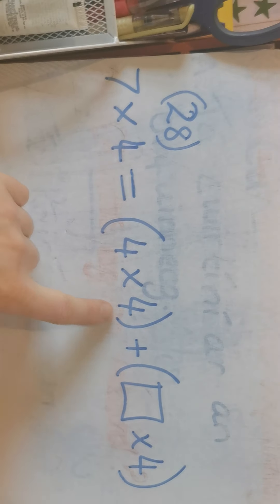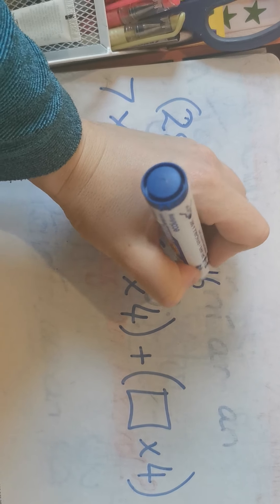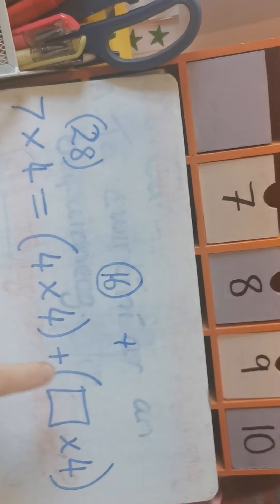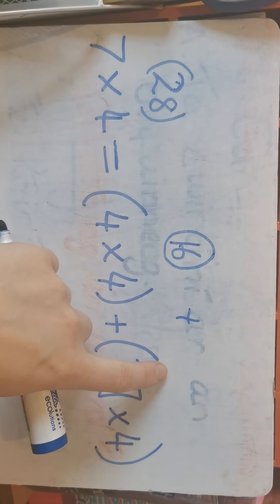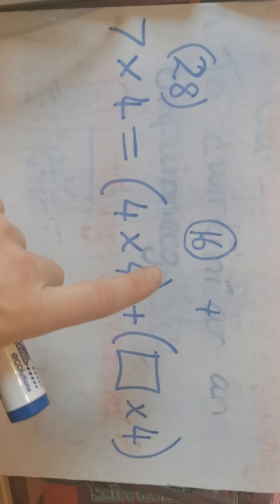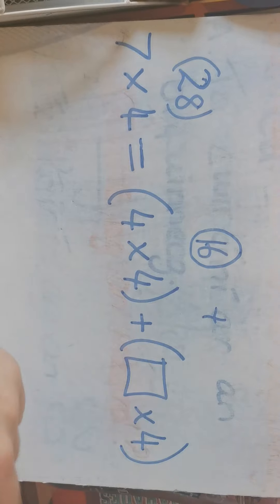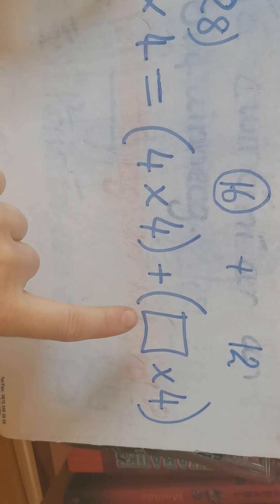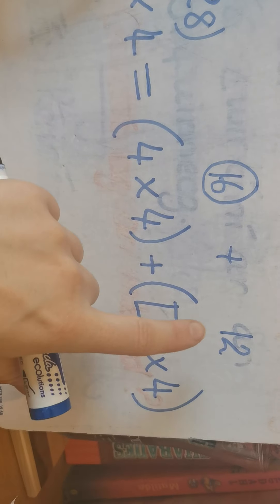So that means everything on this side of the equals has to go up to 28. Four multiplied by four gives us 16. 16 plus what will give us 28? Well, we know 16 plus 12 would give us 28.